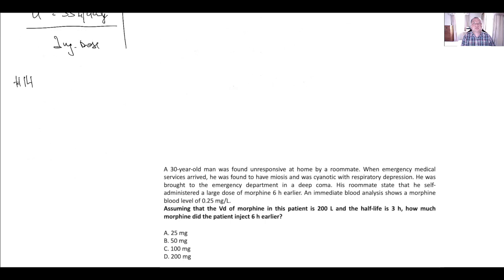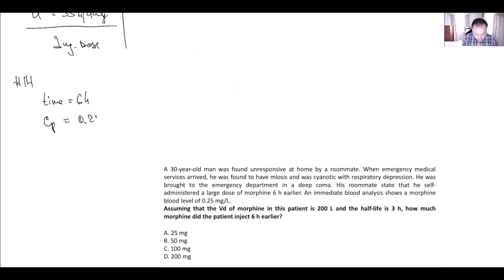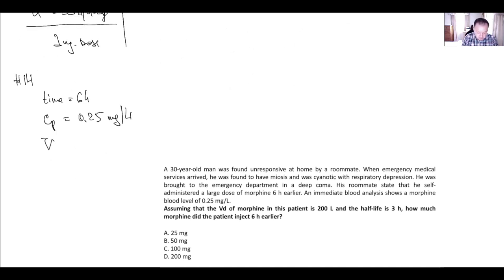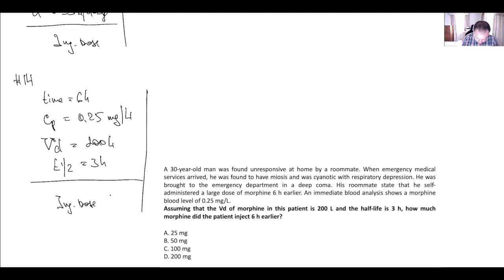Next question: a large dose of morphine. Again we have a time frame of 6 hours. Plasma concentration at the moment of admission is 0.25 milligrams per liter, volume of distribution 200 liters, half-life 3 hours. The question is asking about the ingested dose 6 hours earlier.